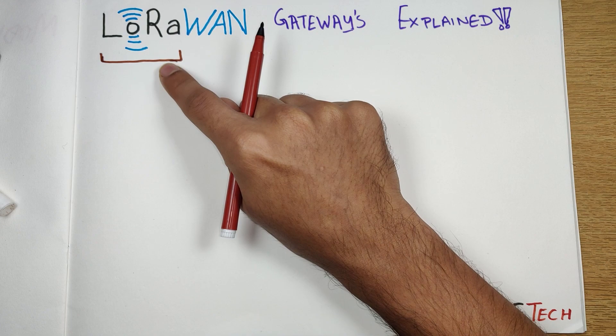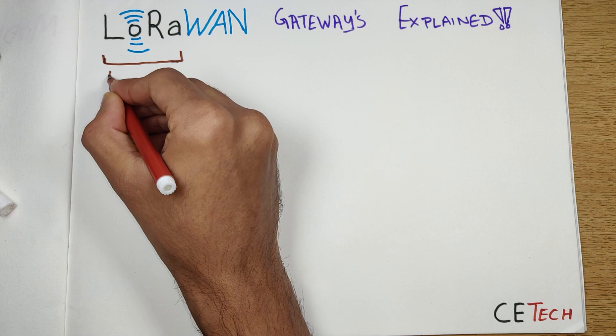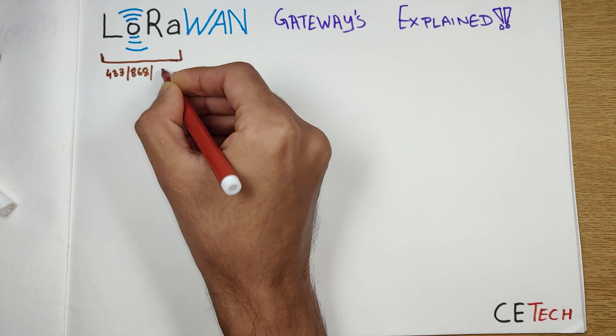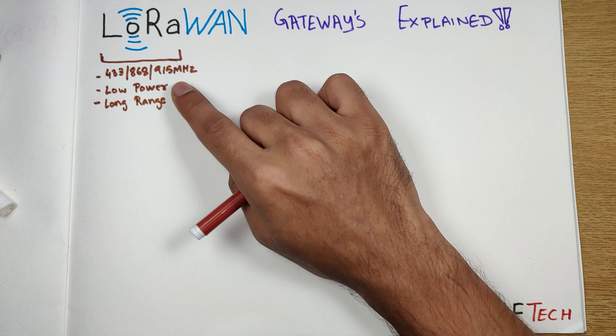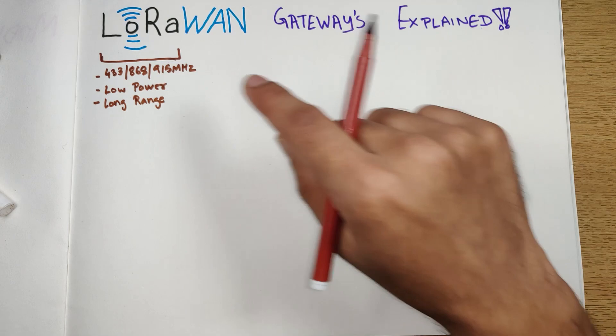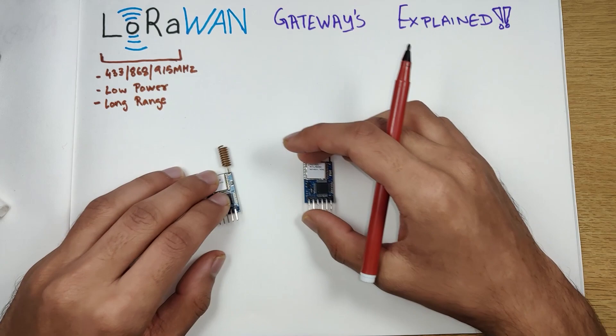Firstly, let's understand what is LoRa. LoRa is a radio frequency based communication protocol. It typically operates in three frequency bands: 433 MHz, 868 MHz, and 915 MHz. It is a low power, long range communication protocol, and that is why it is pretty famous — because the distances you can achieve using LoRa are in the hundreds of kilometers. We'll be talking about range and distance later in the video.